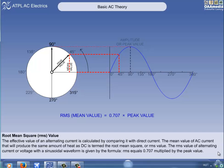By transforming the formula, we can say that the mean or RMS value of alternating current or voltage with a sinusoidal waveform is given by the formula RMS equals 0.707 multiplied by the peak value.